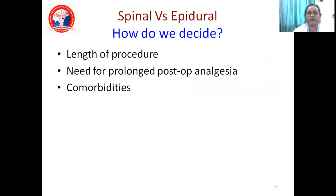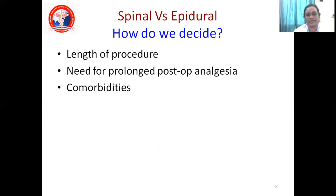How do we decide whether you need spinal or epidural anesthesia? You have to decide based on the length of the procedure. If the procedure is very short in duration, spinal is enough — no need for epidural. For longer procedures and prolonged post-operative analgesia, you need epidural. With spinal anesthesia, the drug lasts around 45 minutes. For epidural, prolonged post-op analgesia can be given via the catheter for even 48 hours. The next important factor is the patient's comorbid illness — whether diabetic or hypertensive — which guides the choice.